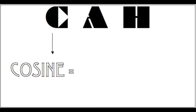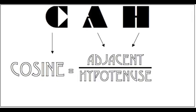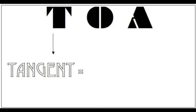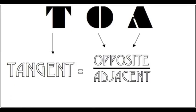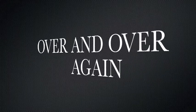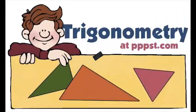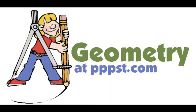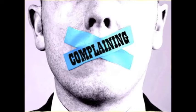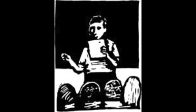Stop and think about right after sine — there's the cosine. CAH tells you: cosine represents the adjacent right over the hypotenuse. Last one's for the tangent — opposite over adjacent. Use it over and over again. It's trigonometry, it's geometry. We got no complaints — we're gonna explain more.